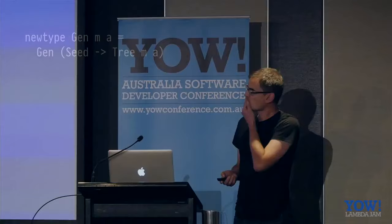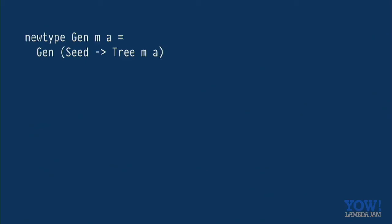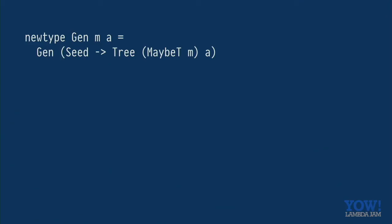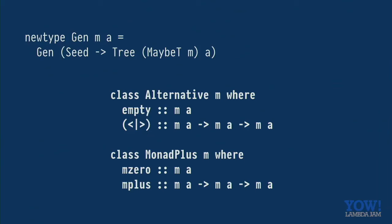So with an effectful tree, it's easy for us to add filtering of generators. So if we look at our gen type, which is simplified, I've taken the size out just for the example, then we have this M here. So what we can do is move that out there and add a maybe T and now our tree supports alternative and monad plus. So if we wanted to implement a filter function, which is like such that in QuickCheck, we can do it like so. So M filter will go down to all the leaves, all the way down the tree and anything which doesn't pass this filter predicate won't be part of our shrinks. And if the very top level thing doesn't pass the test, then we get empty. So that means that we want to try the alternative, which is this filter thing here. So we basically keep looping and trying to generate things until we find at least one thing which passes the predicate.